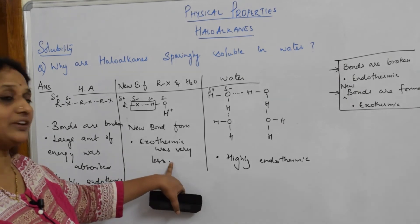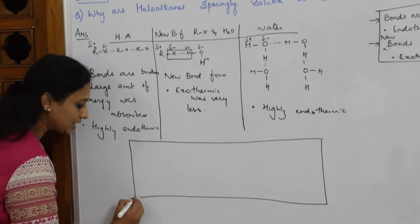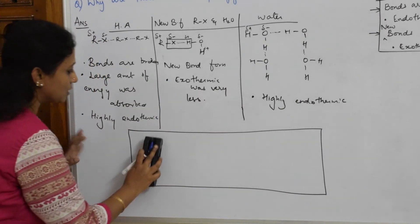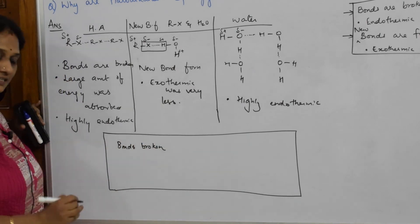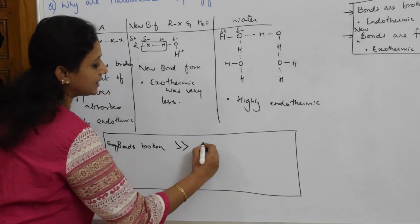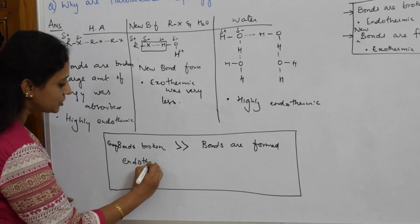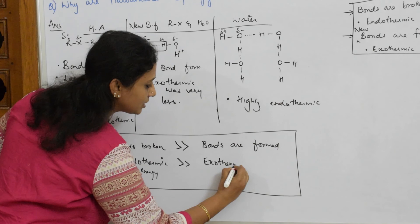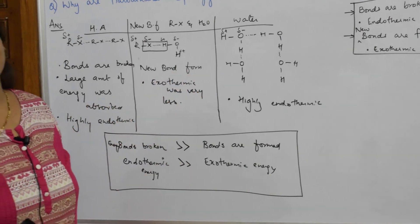So the conclusion is: the energy required for bonds to be broken is very much higher than the energy released when new bonds are formed. The endothermic energy far exceeds the exothermic energy. That is the reason haloalkanes are sparingly soluble in water — they don't prefer to dissolve in water at room temperature.